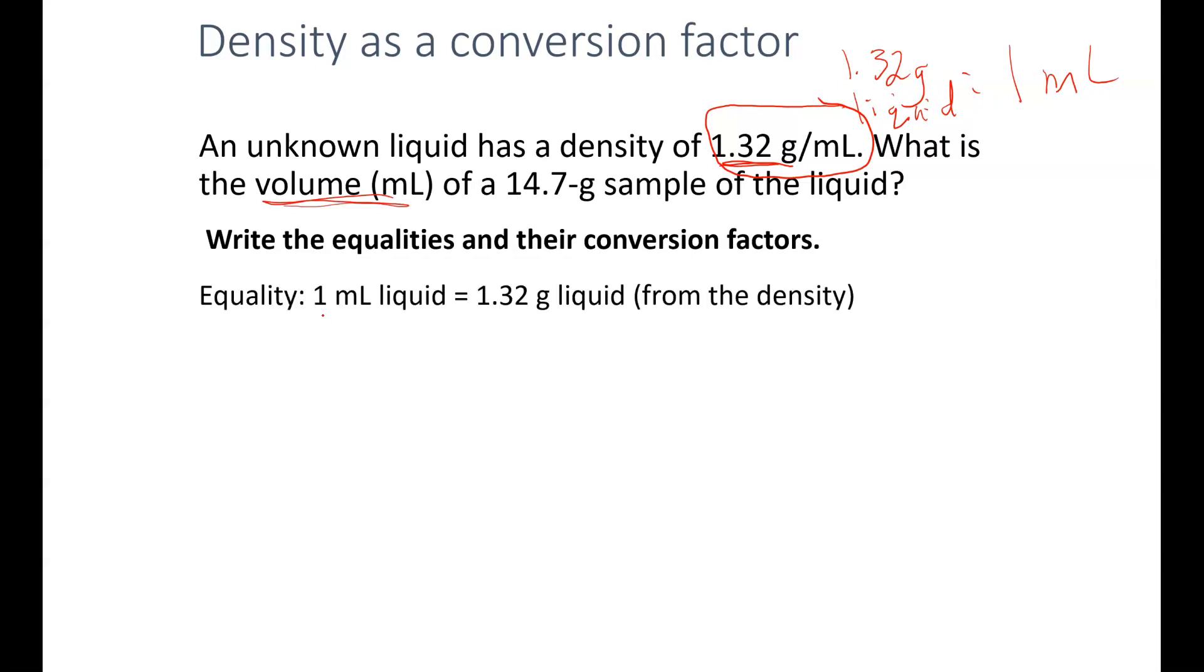So I can write this as an equivalence. So I have my equality, 1 milliliter of liquid equals 1.32 grams of liquid. So notice it doesn't matter which side of the equal sign I have my grams or my milliliters. From this, I can create my two conversion factors, just like we've created conversion factors many times. So my two conversion factors would be 1 milliliter liquid for every 1.32 grams of liquid or 1.32 grams of liquid for every 1 milliliter of liquid.